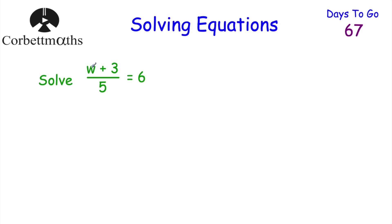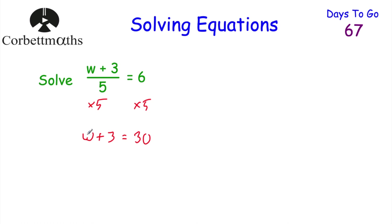Next question: w plus 3 all over 5 equals 6. To solve this, multiply both sides by 5 to get rid of the divide by 5. On the left-hand side we're left with w plus 3, and on the right-hand side 6 times 5 is 30. Then take away 3 from both sides: w equals 27. Perfect. Well done.